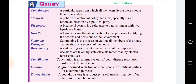Manifesto is a public declaration of policy and aims, especially issued before an election by a political party. Bicameral refers to a government with two legislative houses. A bicameral system is a reference to a government with two legislative houses.